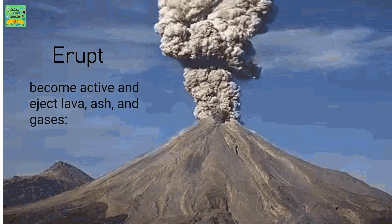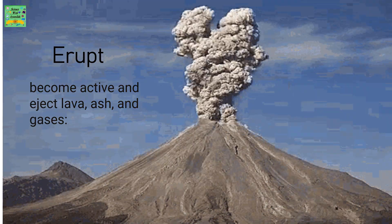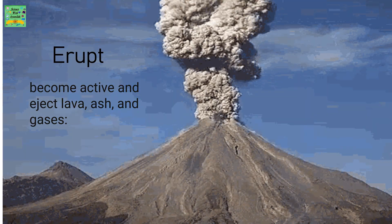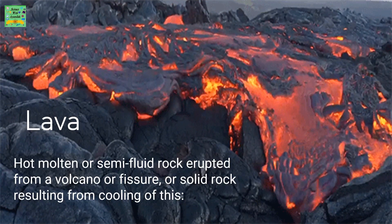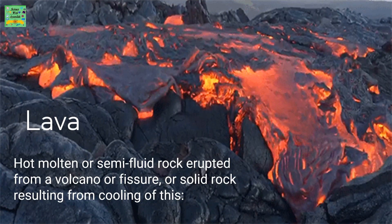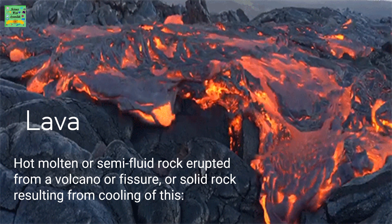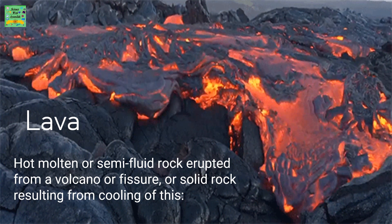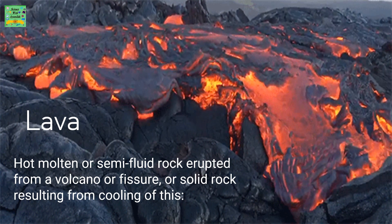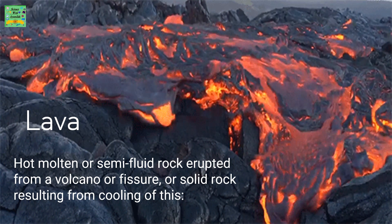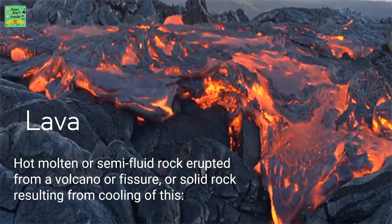Erupt: to become active and eject lava, ash and gases. Lava: hot molten or semi-fluid rock erupted from a volcano or fissure, or solid rock resulting from the cooling of this.